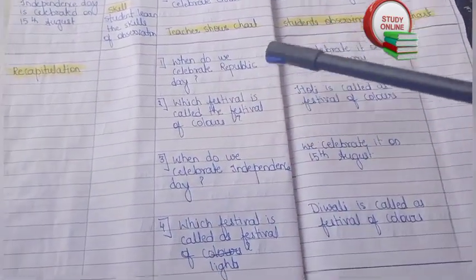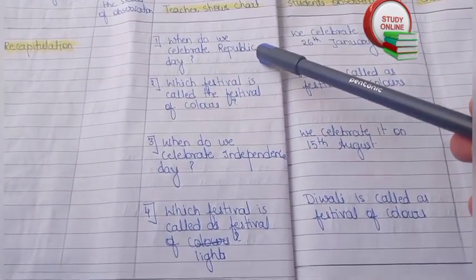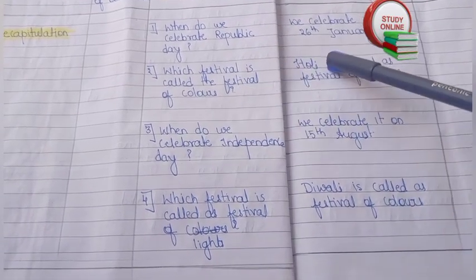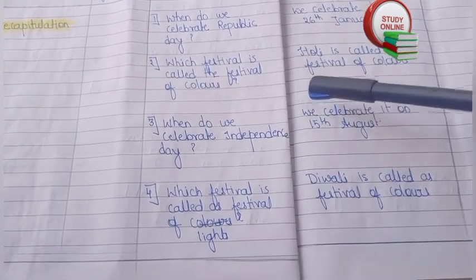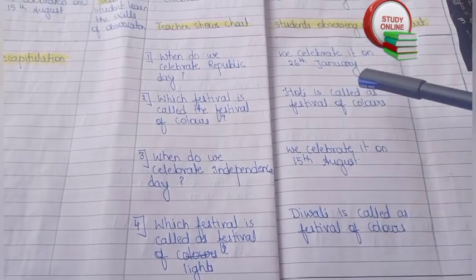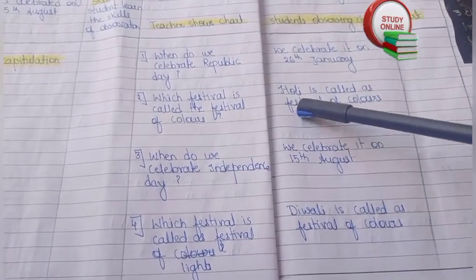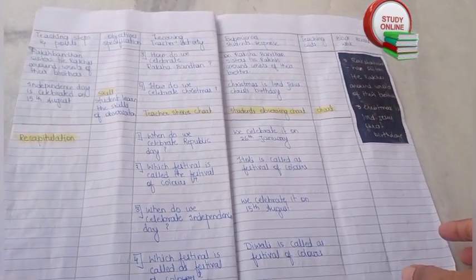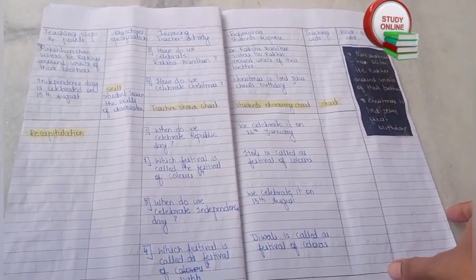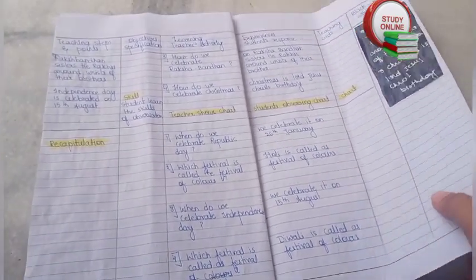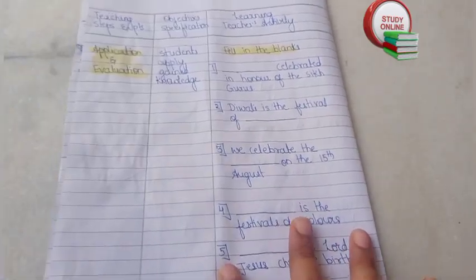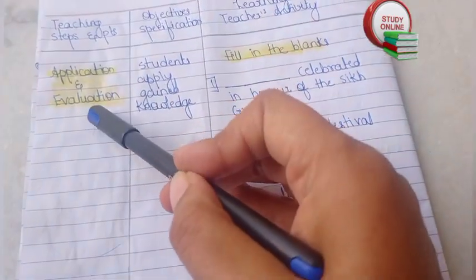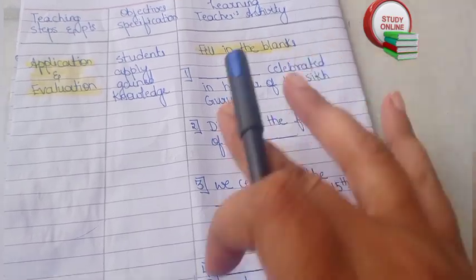For recapitulation, here you can see the list of questions we have to ask students — questions three and four are shown here along with the expected answers we expect from students. This is the overall look of our lesson plan.